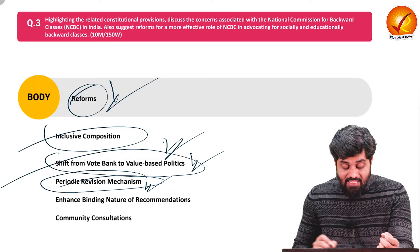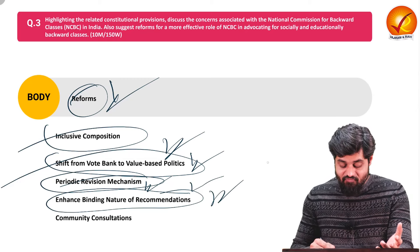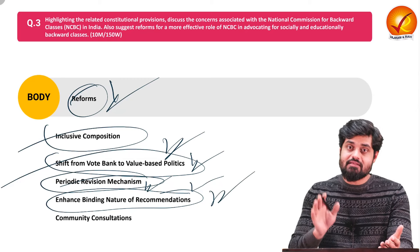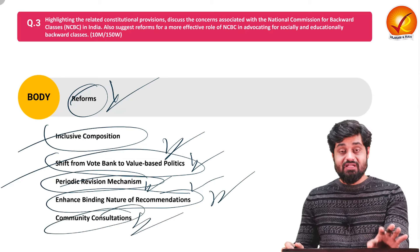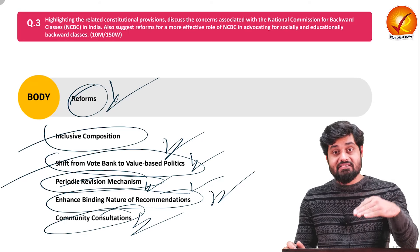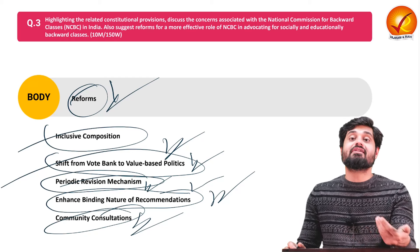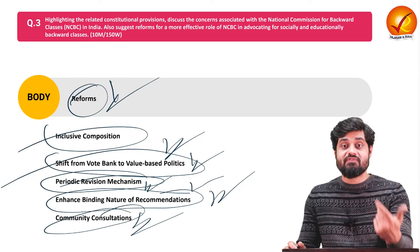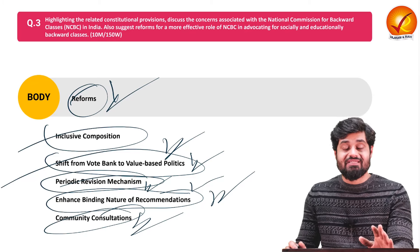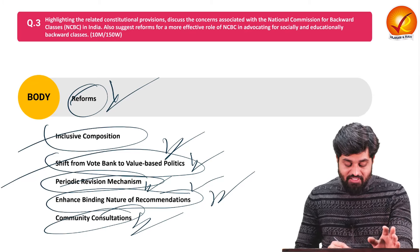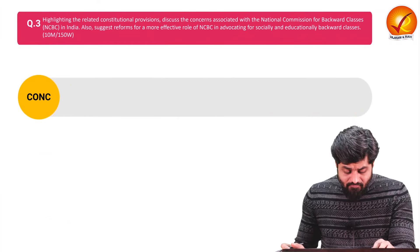Making recommendations binding is also important — currently recommendations are non-binding, so there should be consideration of making at least some recommendations binding. Community consultations are another key reform — a proper mechanism must be built into the National Commission for Backward Classes to extract opinions from civil society organizations and NGOs, incorporating their input into the commission's work.